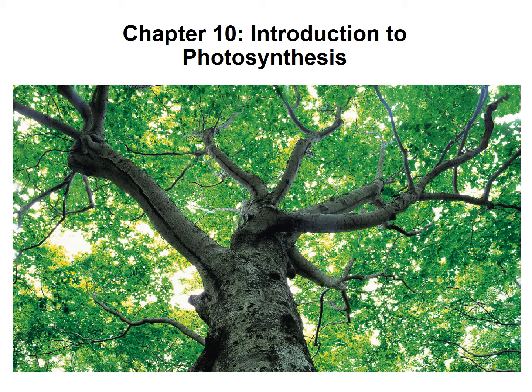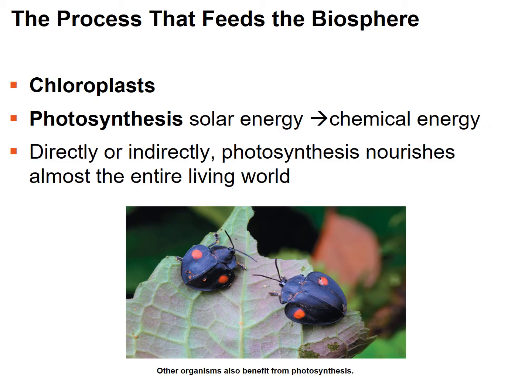Welcome to the chapter on photosynthesis. This segment will introduce photosynthesis and discuss its two major phases, along with some important things to know before getting into the details. Photosynthesis occurs in the chloroplasts, which are an organelle in plant cells and some other types of cells. In general, photosynthesis is a process that allows organisms to take light or solar energy and convert it to chemical energy like sugars.